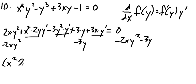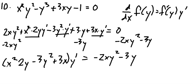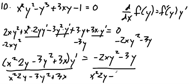On the left-hand side I'm left with x squared times 2y minus 3y squared plus 3x, times y prime — I factored out the y prime and combined those terms. On the right-hand side I have minus 2xy squared minus 3y. So I divide both sides by x squared times 2y minus 3y squared plus 3x. On the right-hand side I get negative 2xy squared minus 3y, all over x squared times 2y minus 3y squared plus 3x.